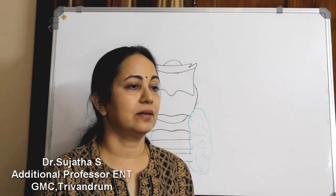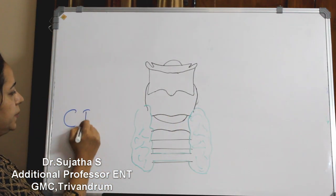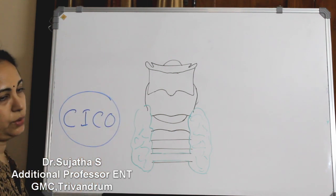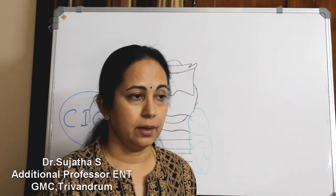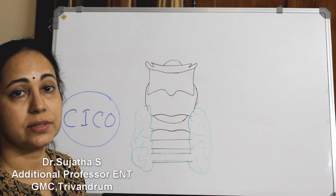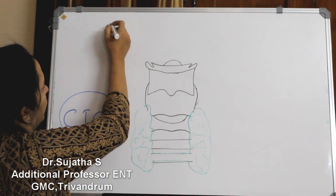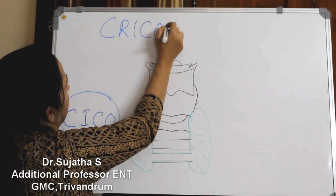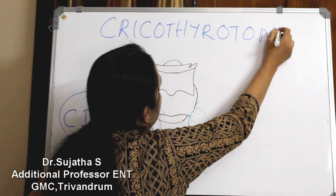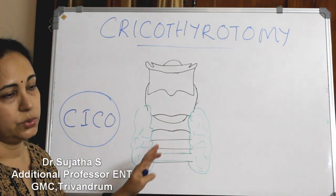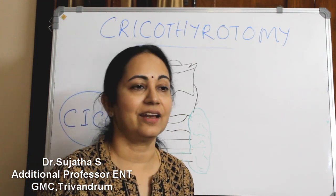In the ER emergency room, you may come across a CICO situation — that is, cannot intubate, cannot oxygenate. In that case, the rescue technique of choice in an adult is cricothyroidotomy. Today we will discuss cricothyroidotomy: its indications, technique, and complications.